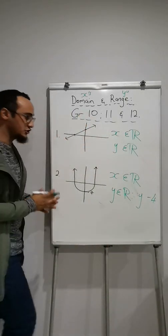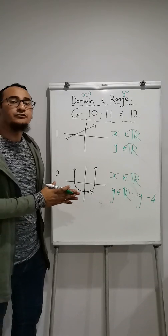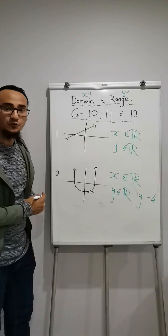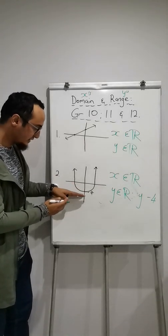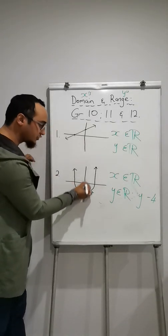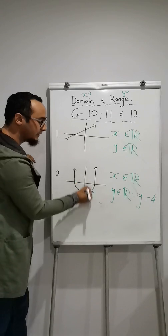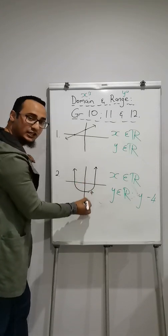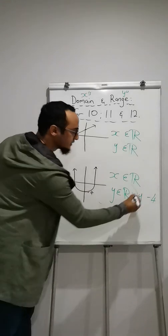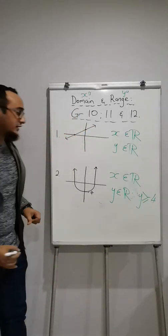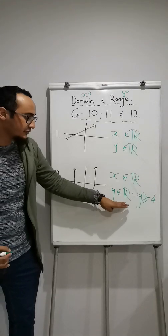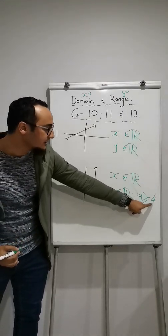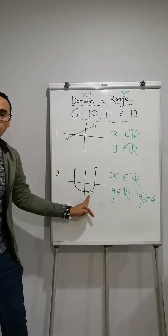Where does my graph appear? Below negative 4 or above negative 4? And you can obviously see it goes on top of negative 4, meaning that the y-values have to be on top or equal to negative 4. So that is how my range will look. Y is an element of real numbers, however, y must be higher than negative 4 over there.